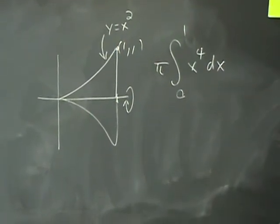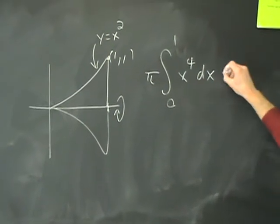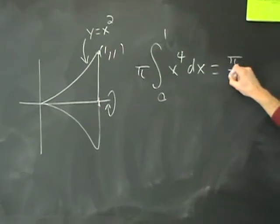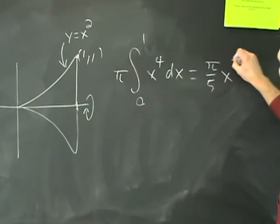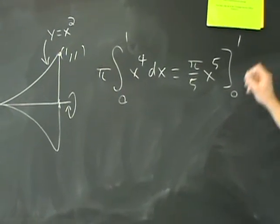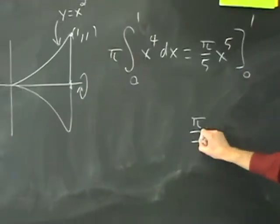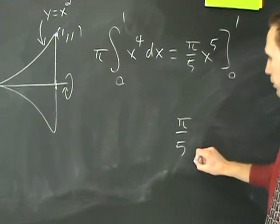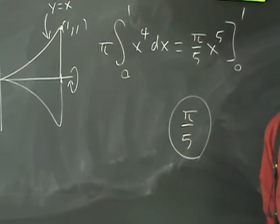No big deal. We just anti-differentiate it. This is going to be pi over 5 times X to the fifth from 0 to 1. When you plug in 1, you'll get pi over 5. When you plug in 0 and subtract it, you get 0. So the volume of the solid is just pi over 5.